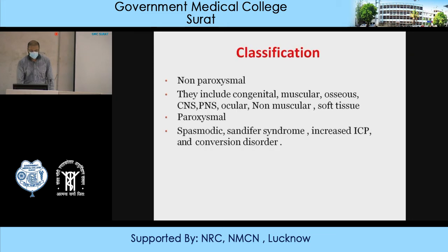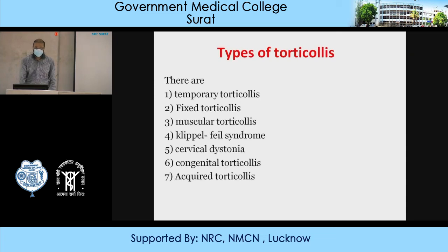Classification of torticollis — non-paroxysmal types include: congenital, muscular, osseous, CNS, PNS, ocular, non-muscular, and soft tissue. Paroxysmal types include spasmodic syndrome, increased ICP, and conversion disorder. The specific types of torticollis are: temporary torticollis, fixed torticollis, muscular torticollis, Klippel-Feil syndrome, cervical dystonia, congenital torticollis, and acquired torticollis.